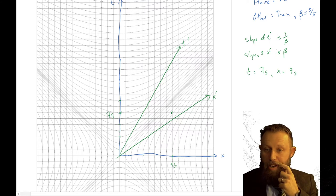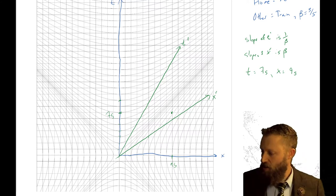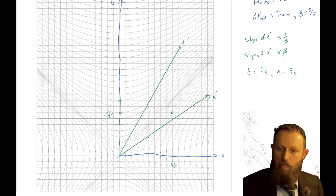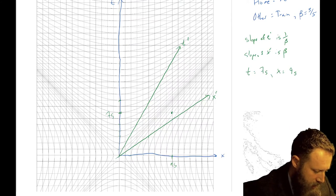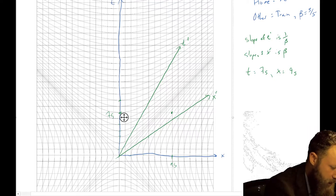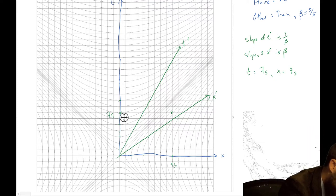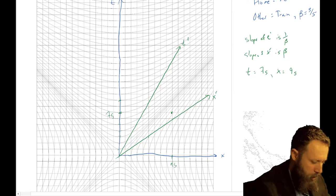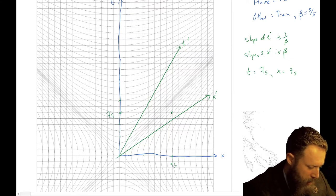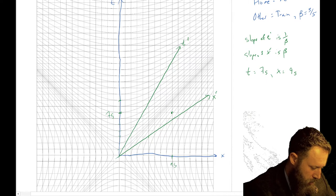Now the question is, how do we actually read that in the prime axis? Well, it turns out we do the exact same thing, which is that we use parallel lines. And so to find out where this is in the t, I'm going to draw a parallel line to the x-prime axis.